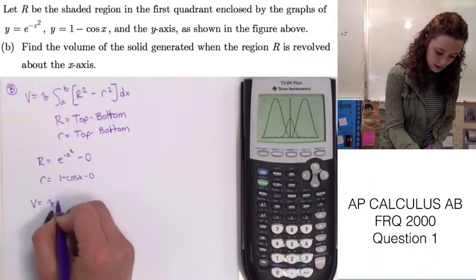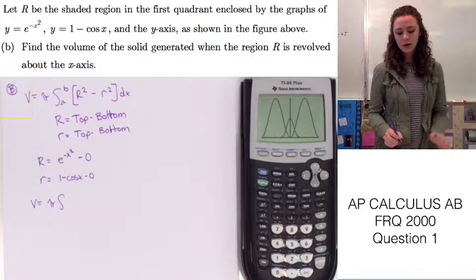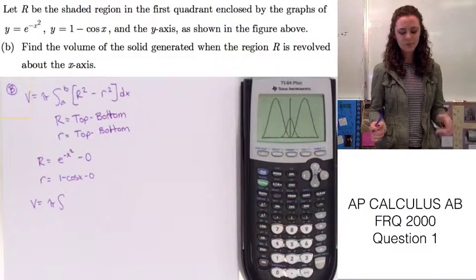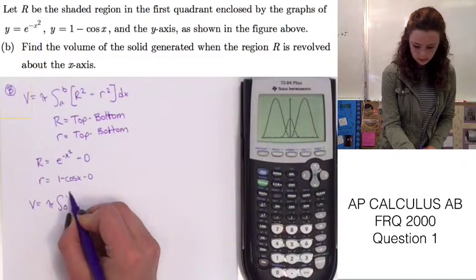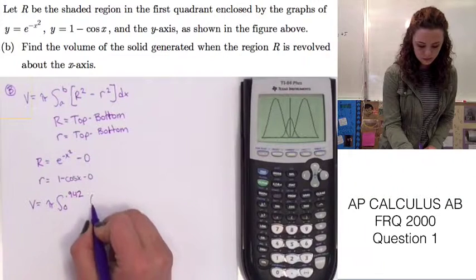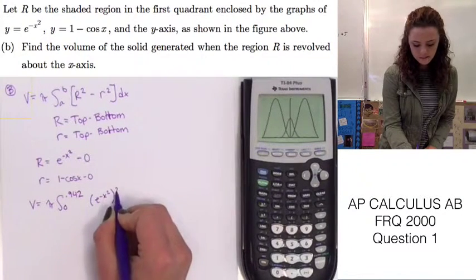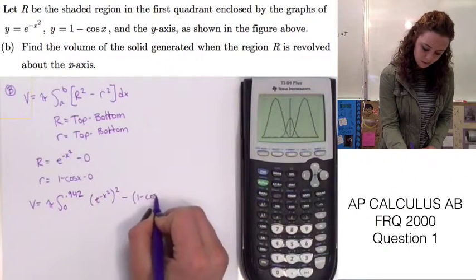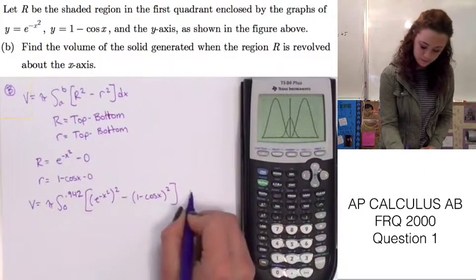We can go ahead and plug these values back into the equation. So V equals pi times, and our limits are going to be the same since we're still working from left to right. So it will be from 0 to 0.942. And we see that big R is e to the negative x squared. That value is all squared minus little r squared dx.